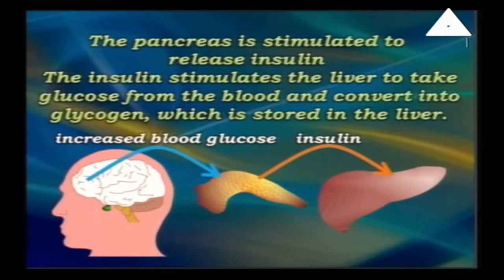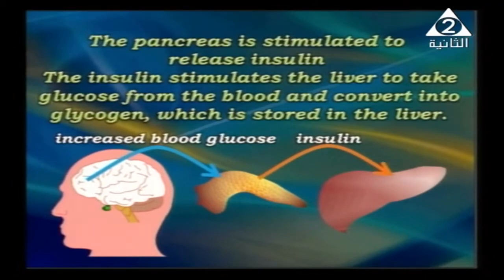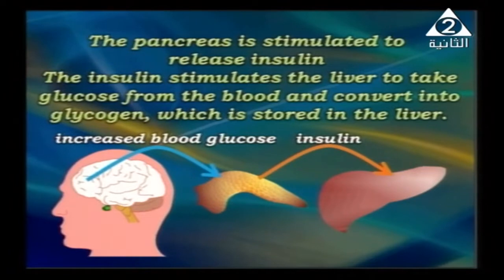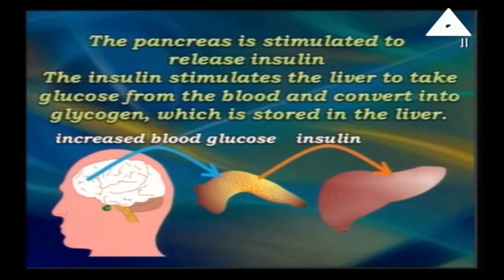The insulin stimulates the liver to take glucose from the blood and store it in another form called glycogen. We cannot store glucose as itself inside the liver because it would cause dangerous chemical reactions. So insulin converts the glucose into glycogen, which is then safely stored inside the liver.